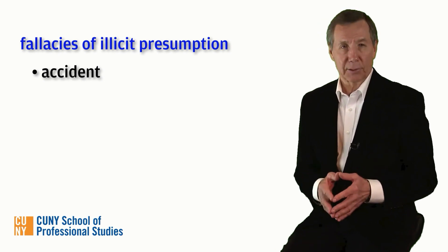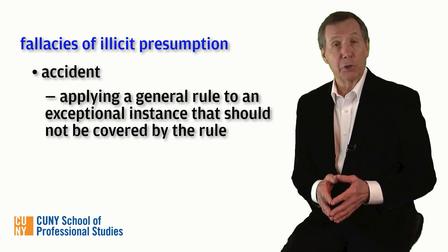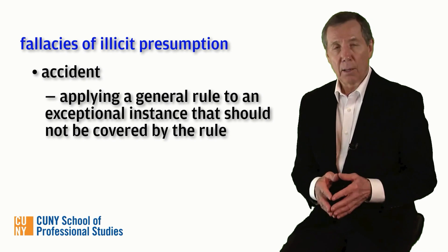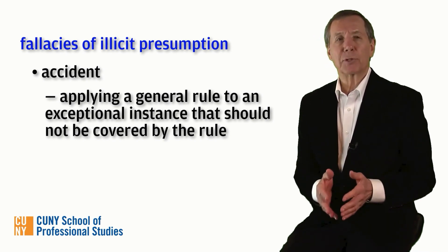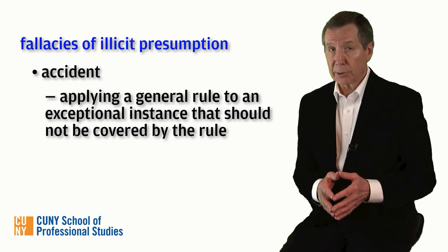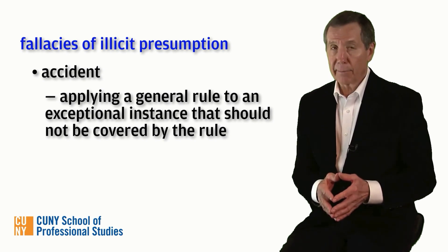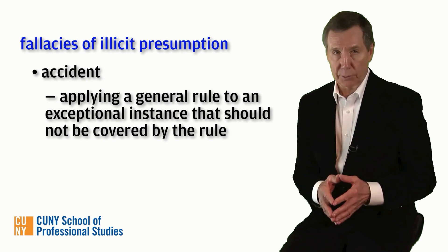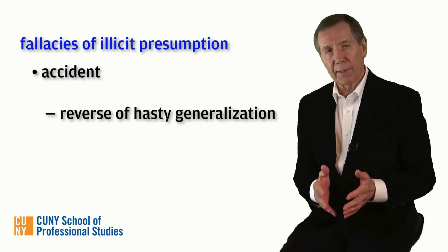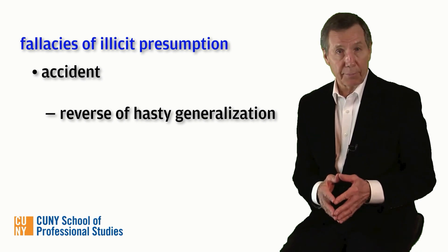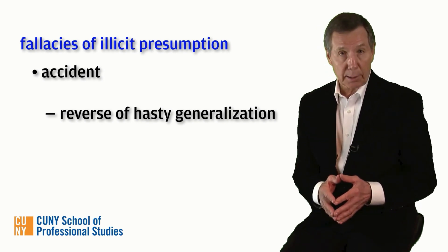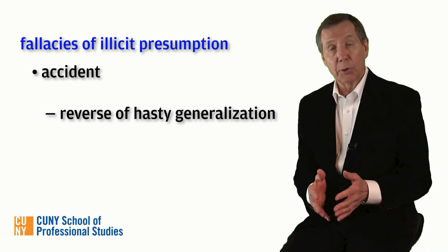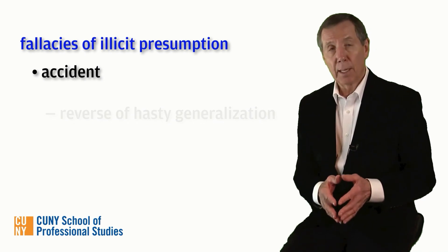Let's start with the fallacy of accident. When we presume the applicability of a general rule to individual cases that it does not actually cover, we commit the fallacy of accident. What makes it fallacious is an illicit presumption: the general rule in the premise is assumed, incorrectly, not to have any exceptions. The fallacy is the reverse of hasty generalization, which is a fallacious inference from an insufficient number of particular cases to a general conclusion. Accident is a fallacious inference from a general premise to an erroneous particular conclusion.